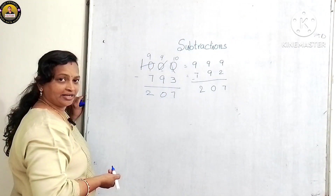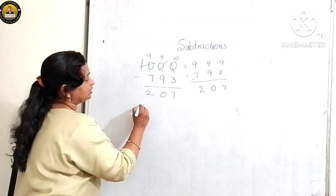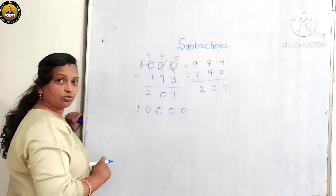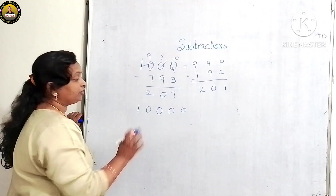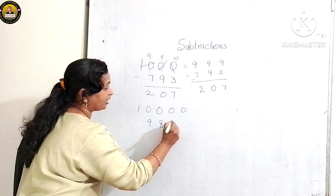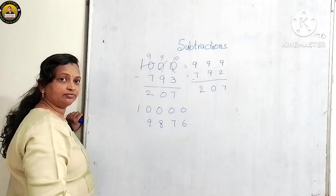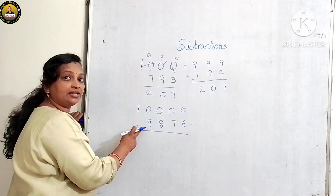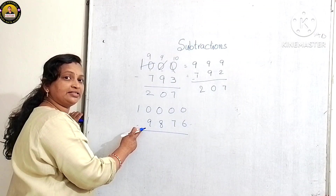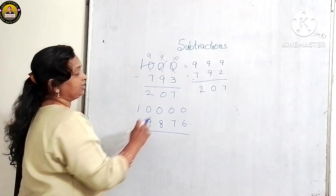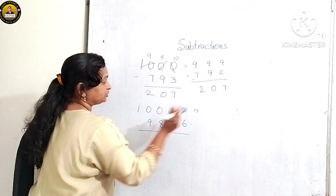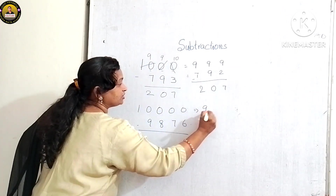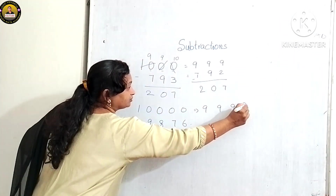Let me show another example. Suppose I take a four-zero number, that is 10,000. If I told you to subtract 9,876 — we need to subtract 10,000 minus 9,876. Come to our method: here four zeros are there, so we take four nines.